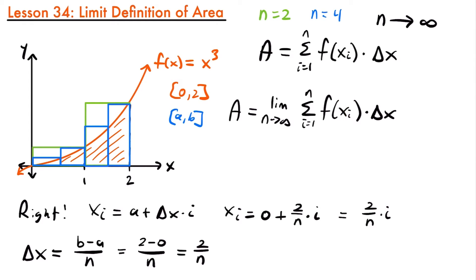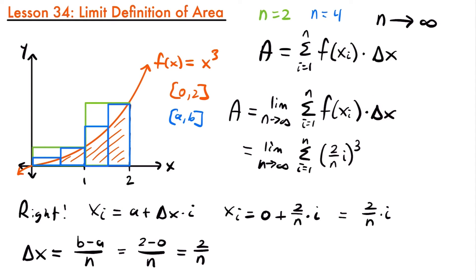Now we know x sub i and delta x, so we can substitute them into our formula. The area equals the limit as n approaches infinity of the sum from i equals 1 to n of f(x sub i) times delta x. We plug 2i/n into x cubed to get (2i/n)³, then multiply by delta x which is 2/n. So we have the sum of (2i/n)³ times (2/n), giving us a formula that finds the area using an infinite number of rectangles.